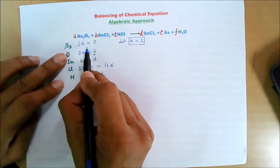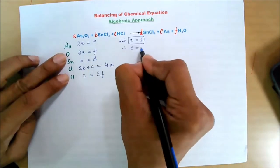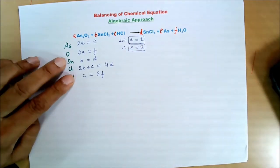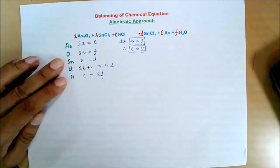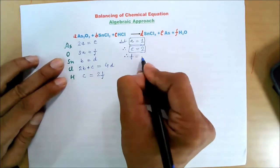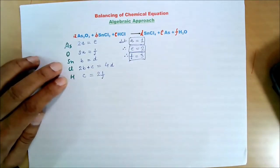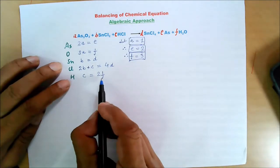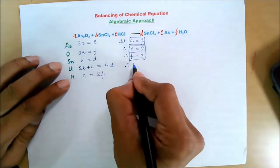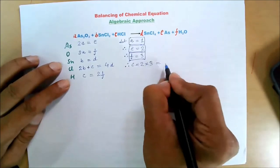This equation says 2A = E, therefore E becomes 2. For oxygen: 3A = F, therefore F becomes 3.